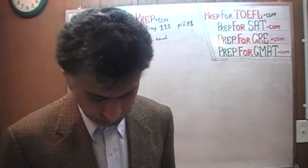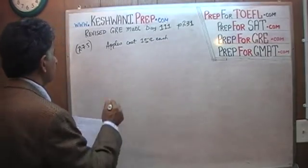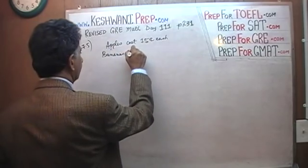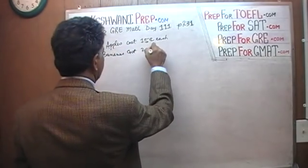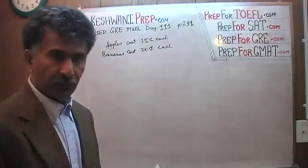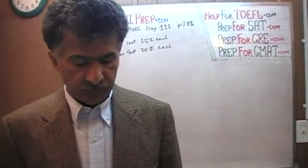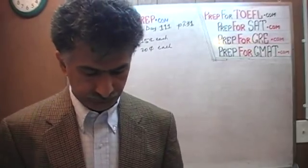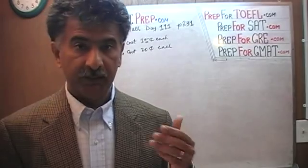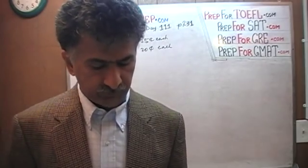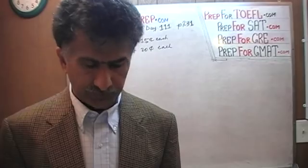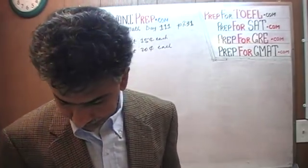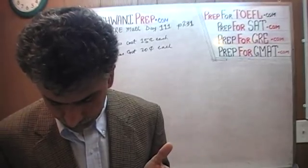And pears cost 20 cents each. In the book they are talking about pears, but I switched that to bananas because I like A and B — I like to be creative. So apples cost 15 cents and bananas cost 20 cents.